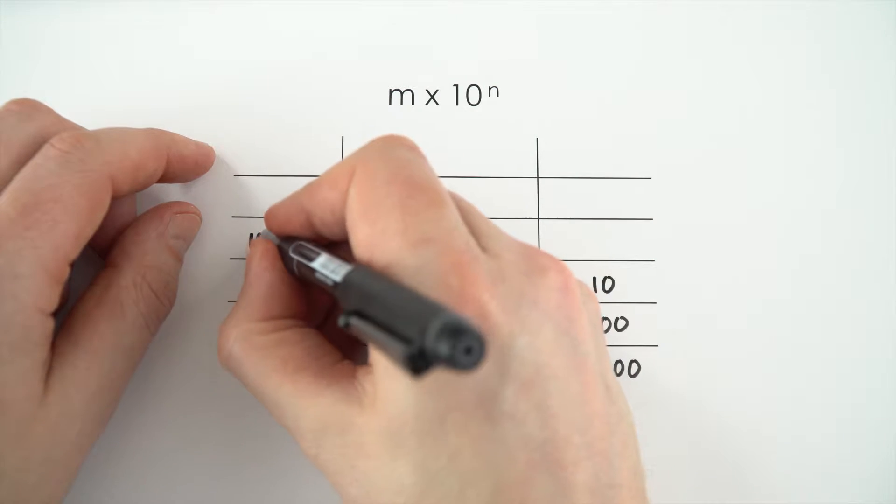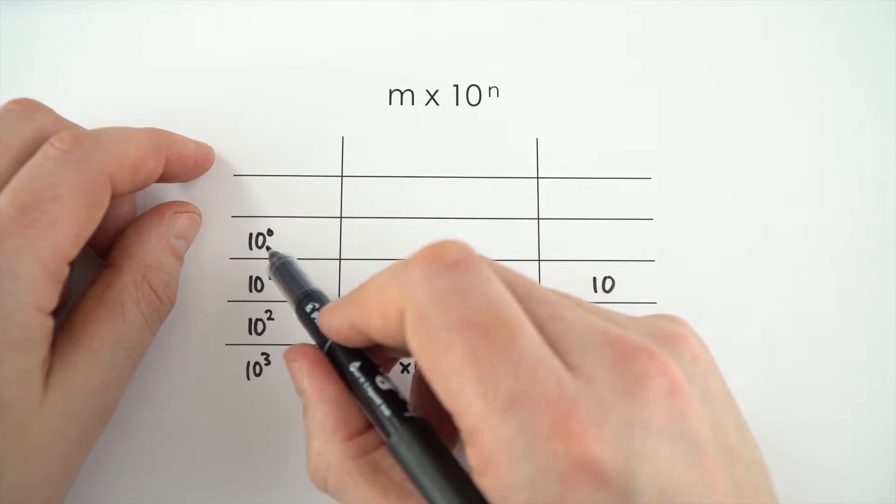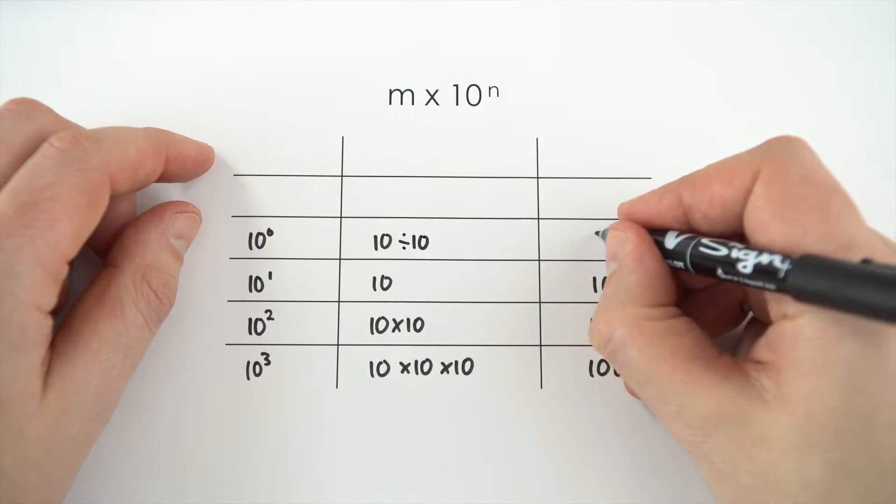What about 10 to the 0? Well, that doesn't really make much sense. We're not multiplying it by anything. But 10 to the 0 is a bit like having 10 divided by 10. And 10 divided by 10 is just 1.